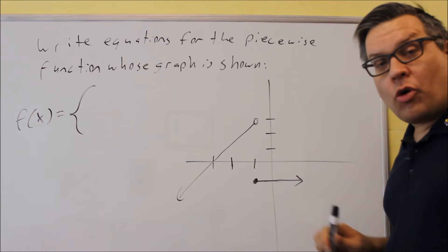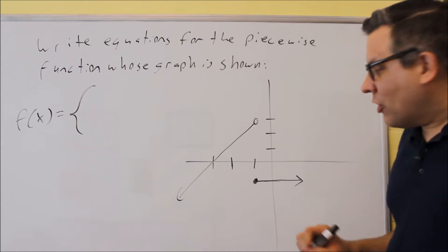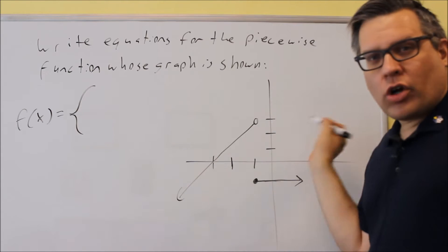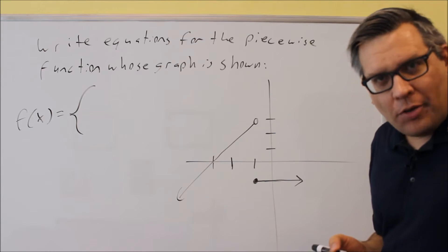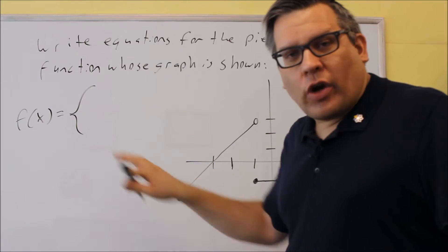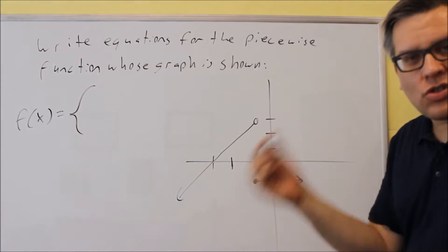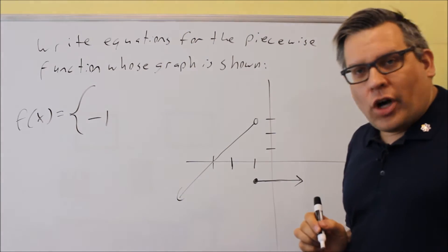Notice that this is a horizontal line, and it's going through negative 1. So if I wanted to write an equation just for a regular line, if it went all the way through, that would just be y equals negative 1. Okay, well, in this case, I'm going to put that equation here. Now, we don't have to put the y equals because we already have the f(x), which is taking the place of the y. Okay, so what I'm going to do is I'm going to go ahead and put negative 1.